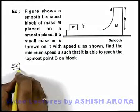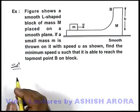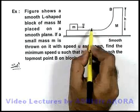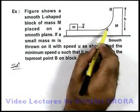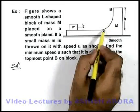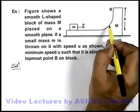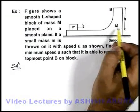Now in this situation, if we just analyze the solution of this problem, we can say that m will start rising on the bigger block. It will start accepting a normal contact force in inclined direction according to the shape of the surface, and due to one component of the force, the block capital M will also start moving.